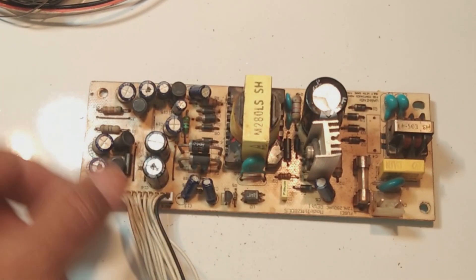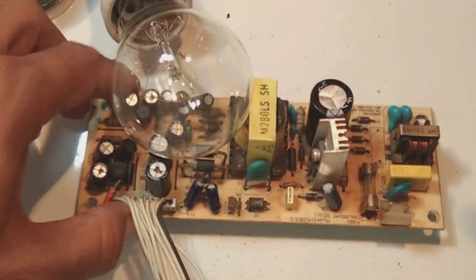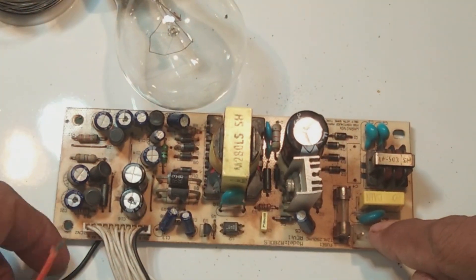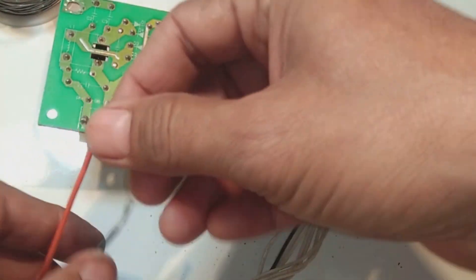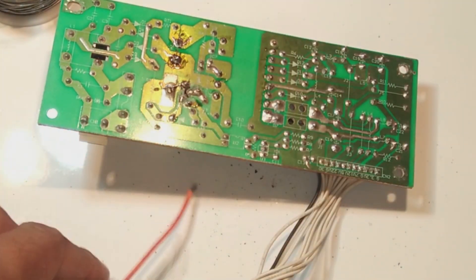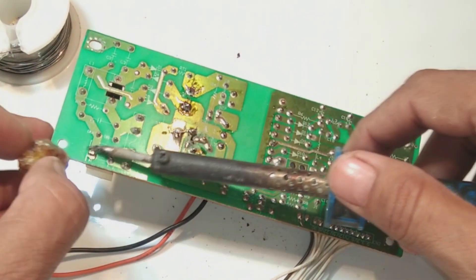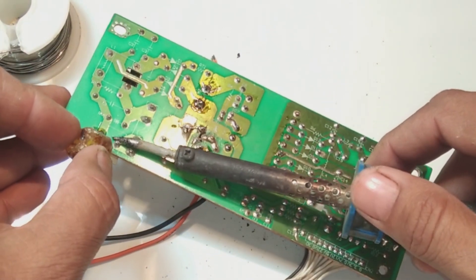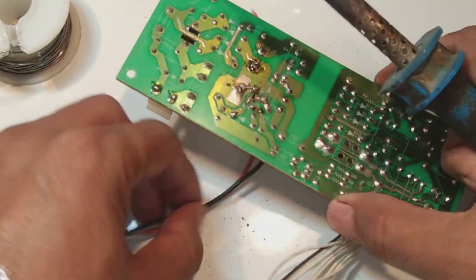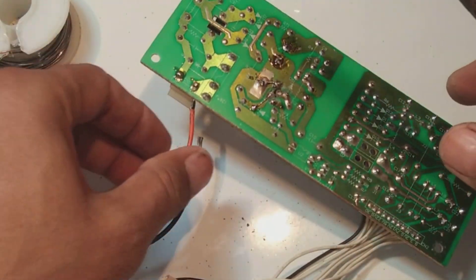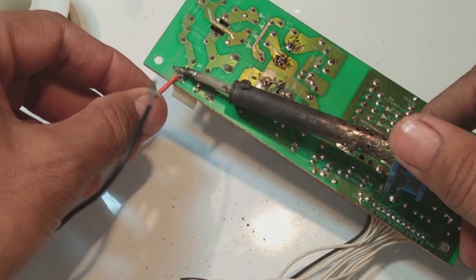Now is the time to test this power supply. If you repaired any power supply, the better choice is to use a series lamp. This is a 100 watt 220 volt lamp, so it will limit the current. It is a good testing procedure to put the power supply in series lamp on first start.